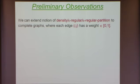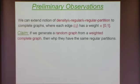Throughout the talk, a graph will always be a complete graph where every edge gets a weight between zero and one. A simple observation is that if you take a weighted graph of this type and generate a random graph from it, then with high probability the graph that you get — the genuine graph — has the same regular partitions as the original weighted graph.